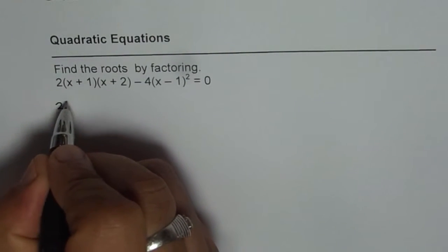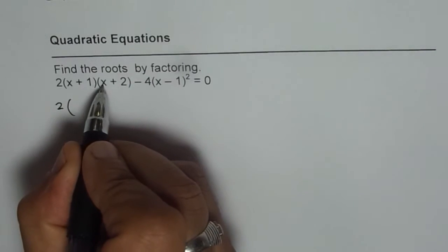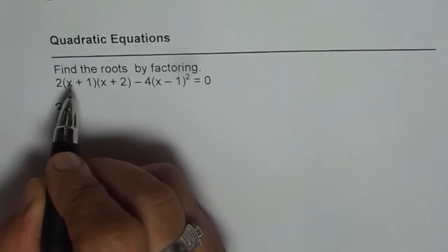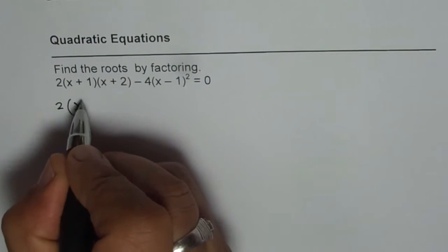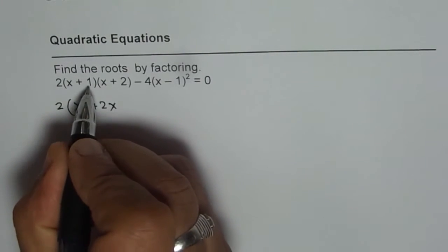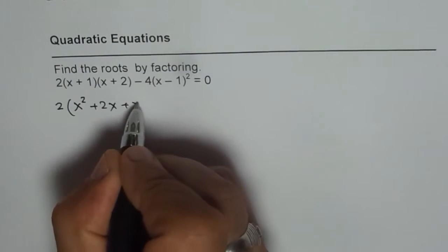So let us expand. We get 2(x + 1)(x + 2). Let us expand that. x times x is x² times 2 will be 2x², and then when you multiply by 1, you get x plus 2.